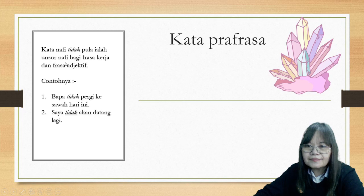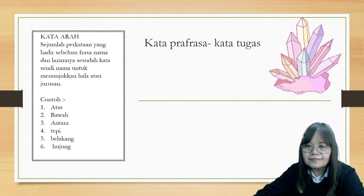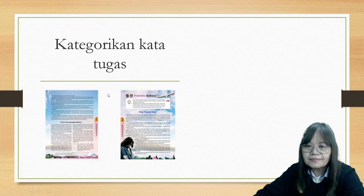Kata nafi 'tidak' pula ialah unsur nafi bagi frasa kerja ataupun frasa adjektif. 'Tidak' digunakan untuk menafikan frasa kerja dan frasa adjektif. Contoh: 'Bapa tidak pergi ke sawah hari ini.' Dua: 'Saya tidak akan datang lagi.' Kata arah ialah sejumlah perkataan yang hadir sebelum frasa nama dan lazimnya sesudah kata sendi nama untuk menunjukkan haluan atau jurusan. Contoh kata arah ialah seperti atas, bawah, antara, tepi, belakang, dan hujung. Itu kategori kata tugas.